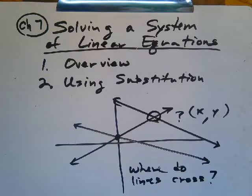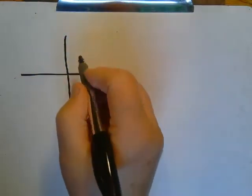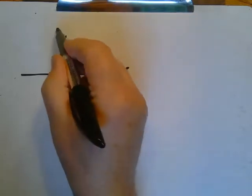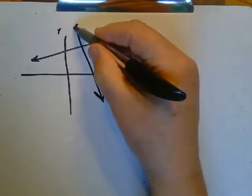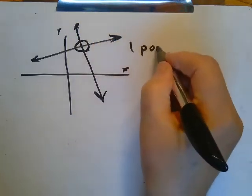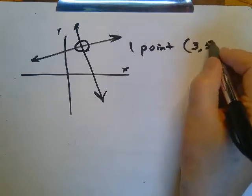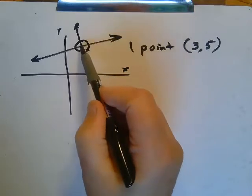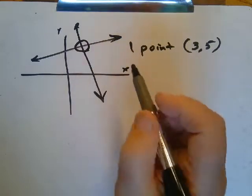Now there are three things that can happen when we look at this. Number one — and I just showed you a picture of this — is where the two lines intersect. There are two lines and they intersect in one point. That point will be an ordered pair, like 3, 5, or something like that. The first situation is where they intersect in one point.